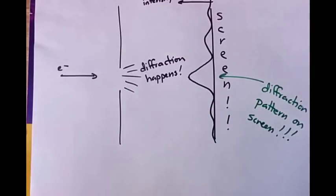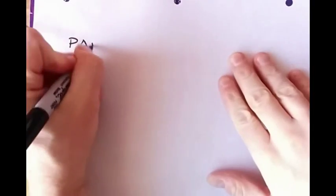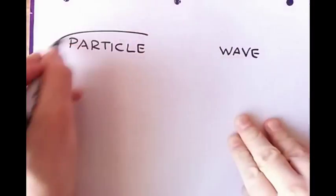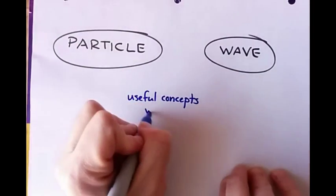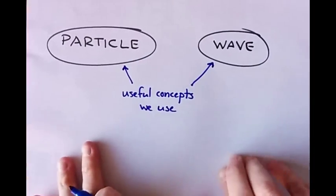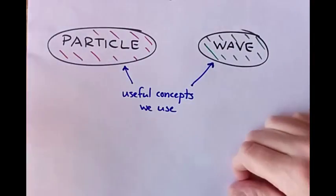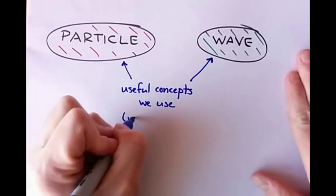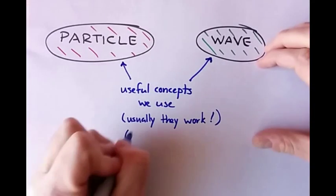Well, remember, this word, or this concept of particle, and this word or concept of wave, those are just concepts that we put onto the electron, or whatever else we're talking about, and we use it to understand them better, or to think about them better. Usually, those concepts of particle and wave work. They worked very well for hundreds of years.